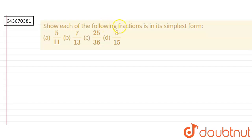In this question, we have to show that the following fractions are in their simplest form. The first fraction given to us is part A, 5 by 11.